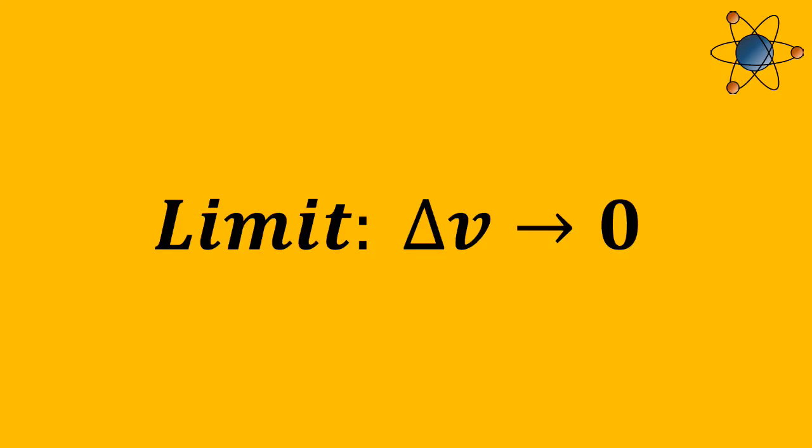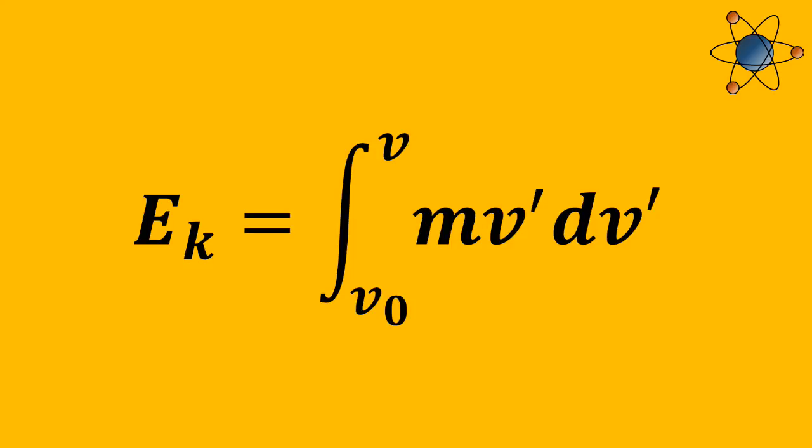As delta v goes to zero, so as the increments in the increase in velocity get smaller and smaller, this equation actually becomes an integral.